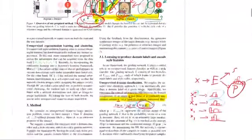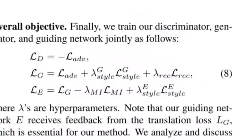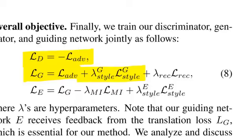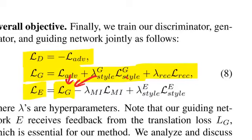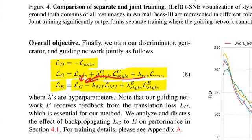This is the full loss: discriminator adversarial loss; generator adversarial loss plus style round-trip consistency plus own-image reconstruction consistency; encoder receives all of the generator's backpropagated loss plus the mutual information loss and the style contrastive loss. Very complex, with many losses working together.